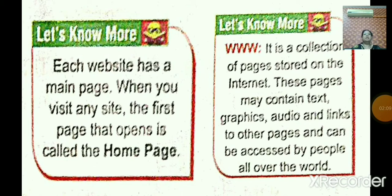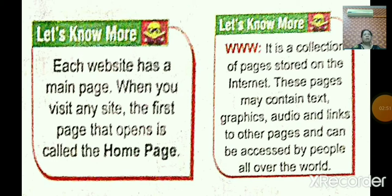WWW is a collection of websites or web pages. In these websites, you can see the collection of web pages stored in the web server and connected to local computers. WWW is a collection of pages stored on the internet. These pages may contain text, graphics, audio, links to other pages, and can be accessed by people all over the world.